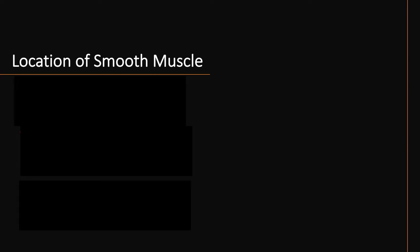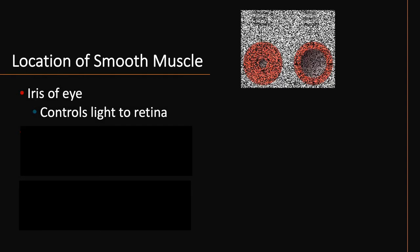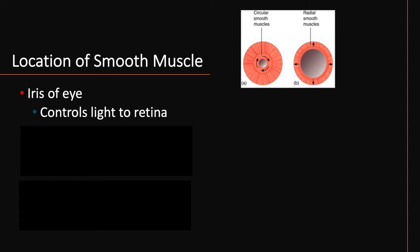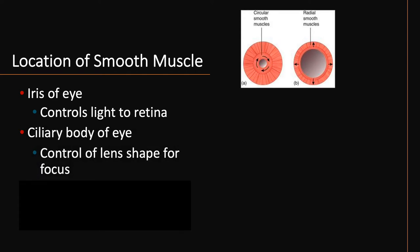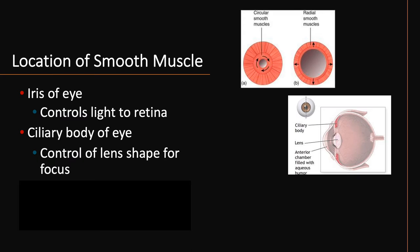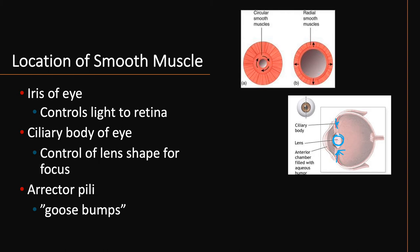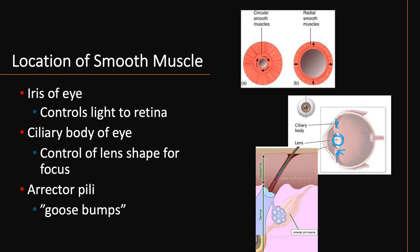Not only is smooth muscle found within the walls of hollow organs, we also see that it composes some other special structures. For example, the iris of the eye can dilate or constrict to control the amount of light that enters the eye and hits the retina. Also, the ciliary body of the eye — when it contracts, the suspensory ligaments get loose and the lens takes on a more spherical shape. And then also the erector pili, found at the base of hair follicles — when those smooth muscles contract, they lift the hair up and give us goosebumps.